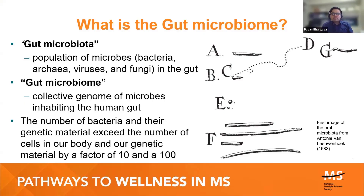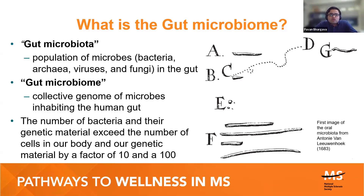To give some background, I'm going to talk about what we mean by the gut microbiome. We've really come to understand over the last decade that the gut and the bacteria and microorganisms that live there might play an important role in MS. When we say gut microbiota, this refers to all the microbes — bacteria, archaea, viruses, and fungi — that live in the gut. The term gut microbiome refers to the genetic material inside these microbes.